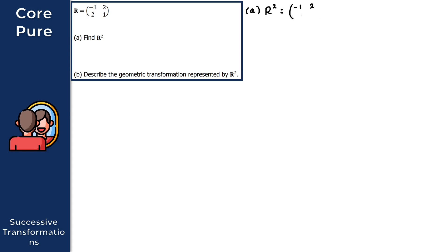We have [[-1, 2], [2, 1]] times [[-1, 2], [2, 1]]. To find this product we can either do it by hand or use a calculator. For the top-left element: minus 1 times minus 1 is 1, plus 2 times 2 which is 4, giving 1 plus 4. For the top-right: minus 1 times 2 is minus 2, plus 2 times 1 is 2, giving minus 2 plus 2. For the bottom-left: 2 times minus 1 is minus 2, plus 1 times 2 is plus 2.